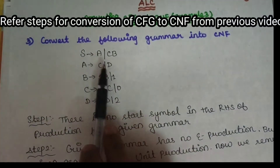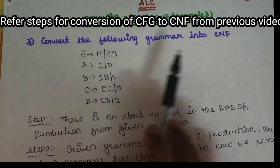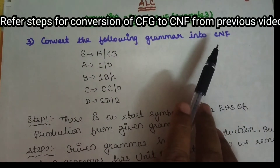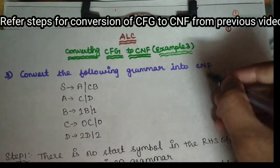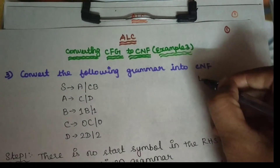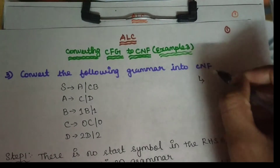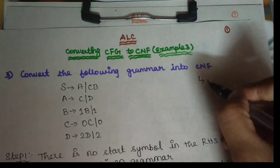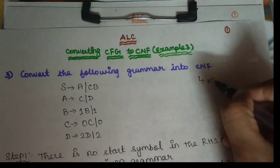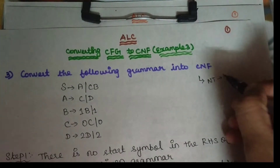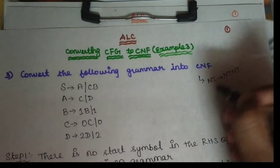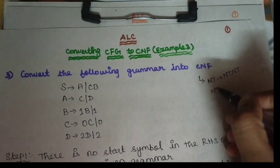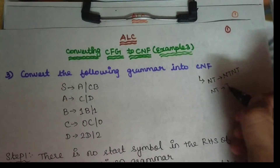Let's talk about this context-free grammar and Chomsky Normal Form. We are talking about productions — non-terminal to non-terminal, non-terminal, and non-terminal to terminal.